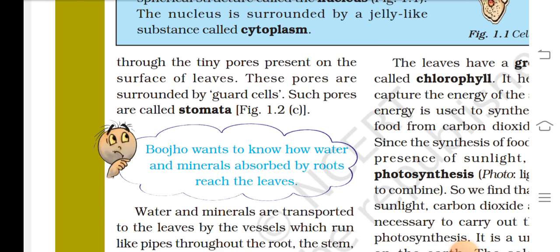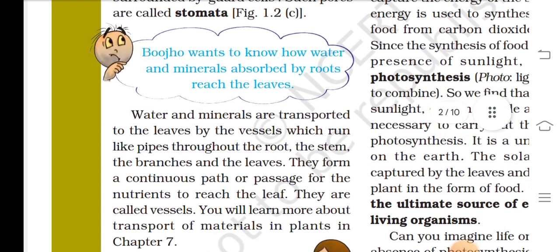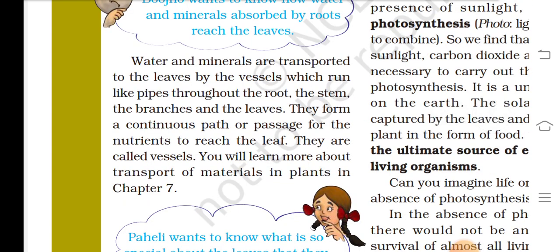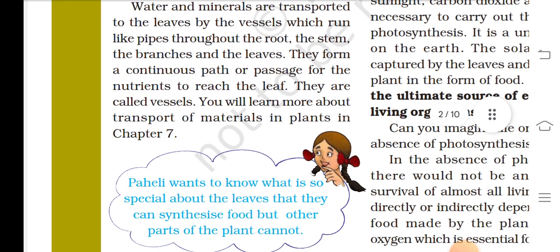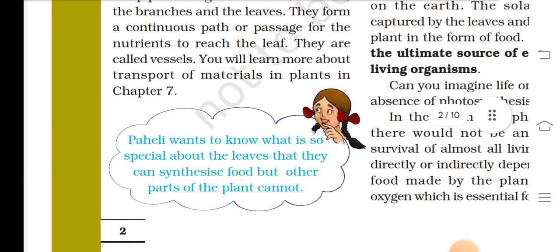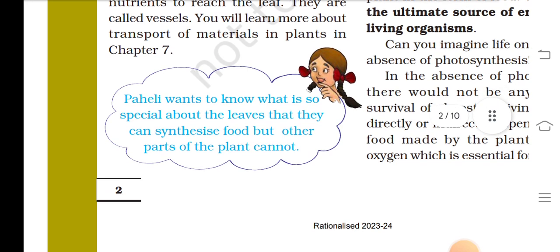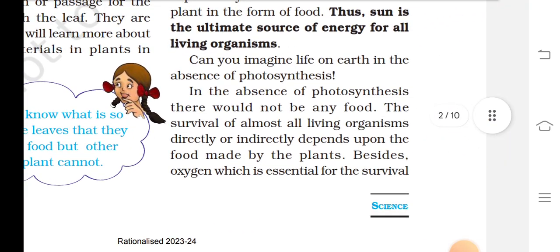Carbon dioxide enters the leaf through tiny pores on its surface. These pores are surrounded by guard cells and are called stomata. Water and minerals are transported to the leaves by vessels, which run like pipes throughout the root, the stem, the branches and the leaves, forming a continuous passage for nutrients to reach the leaf. You will learn more about transport of materials in plants in chapter 7.